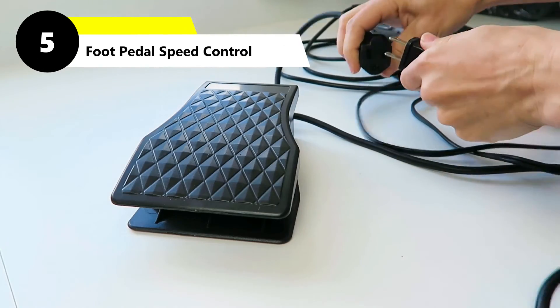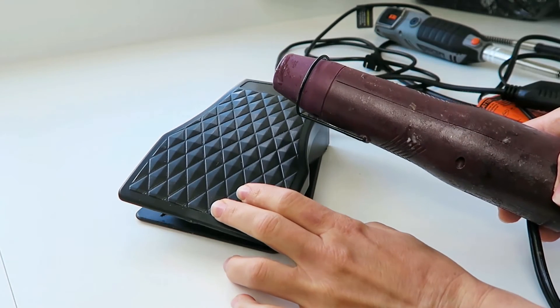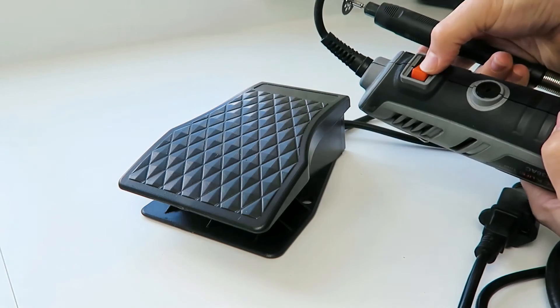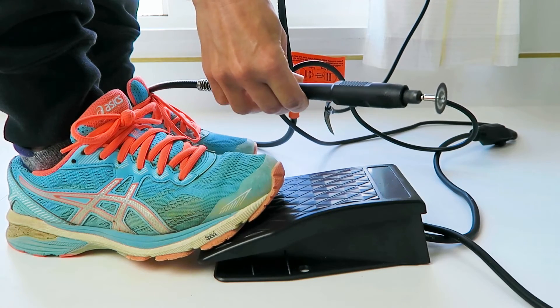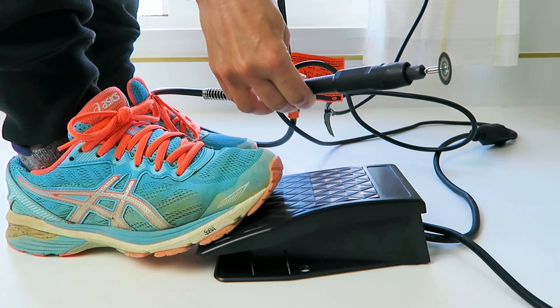Tip 5: Control your tool speed hands-free with a foot pedal. Plug your heat gun or rotary tool into the pedal, set the tool to the maximum speed you want, then press the foot pedal to turn it on. Push down harder for faster speed or release the pedal to turn off the tool.